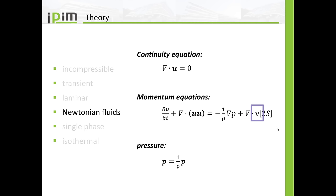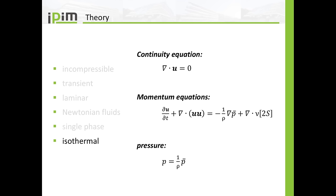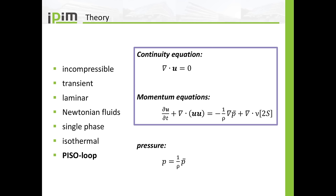Laminar means that we do not have an additional treatment of turbulent phenomena. Newtonian fluids means that in the diffusion term we only have one constant value for the viscosity that is constant over time and in the entire domain. Single phase means that we do not have an additional treatment of, for example, multiphase phenomena. Isothermal means that we do not have an energy equation. And I want to point out that the pressure P is not really the pressure, but rather the pressure divided by the density.